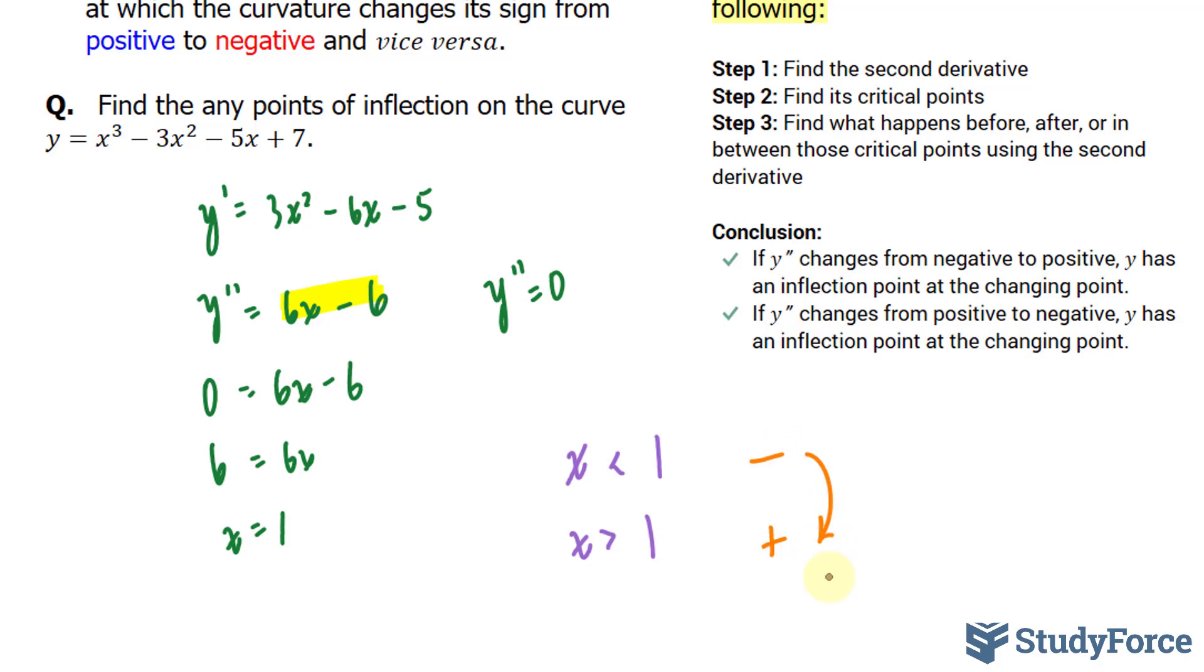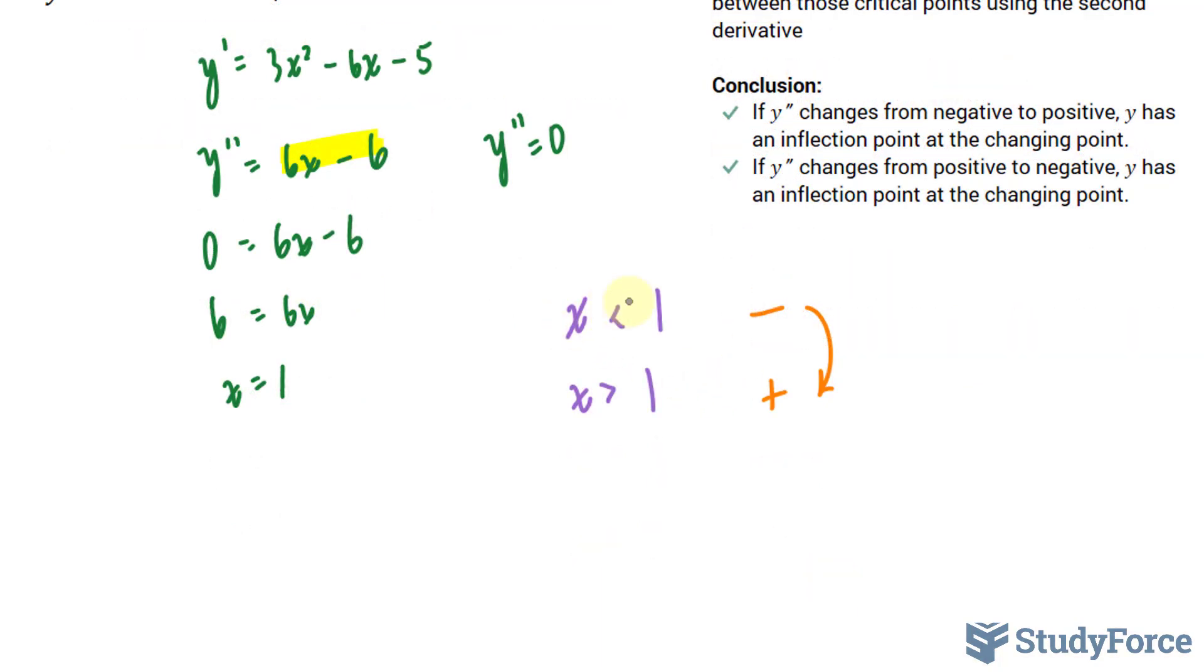What this means is that at x is equal to 1, the curve changes from being concave downwards to convex, or concave upwards. Notice the negative and the positive. So before x is equal to 1, it was concave down and after x is equal to 1, it is concave up. Now, let me show you a visual of this.